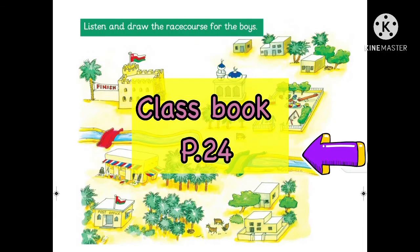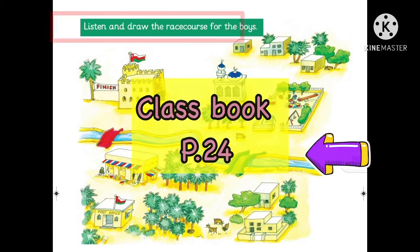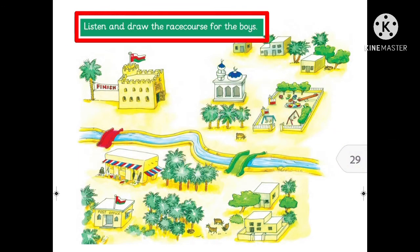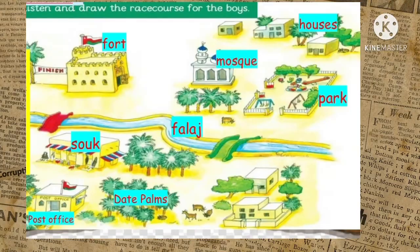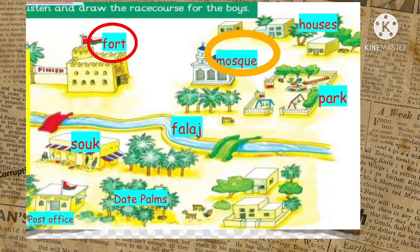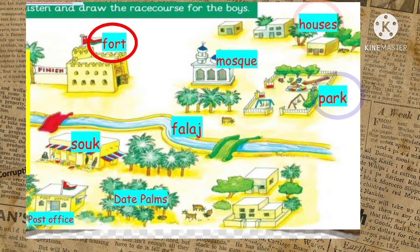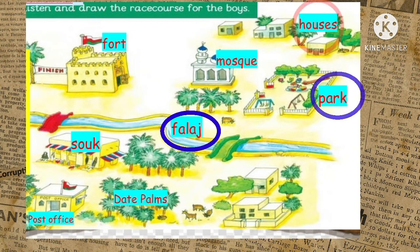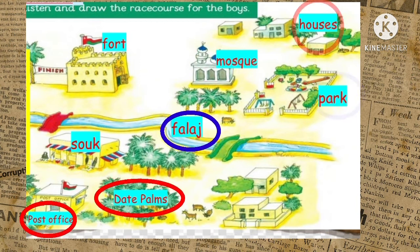Hello, grade 4, and welcome to another lesson. Go to your classbook, page 24. You are going to listen and draw the race course for the boys. First, let us know the names of places on this map: the fort, the mosque, the houses, the park, the village, the date palms, the post office, and the souk.